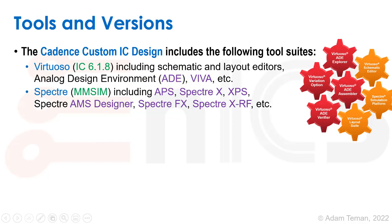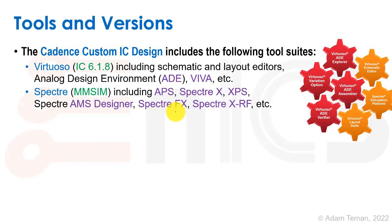Virtuoso includes things like Viva, which is the waveform viewer and calculator, and so forth. Spectre, on the other hand, includes APS, Spectre-X, XPS, Spectre-AMS Designer, Spectre-FX, and Spectre-XRF, which we're going to be discussing a little bit about now.